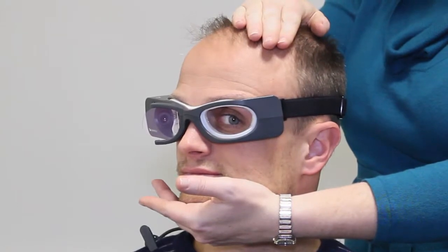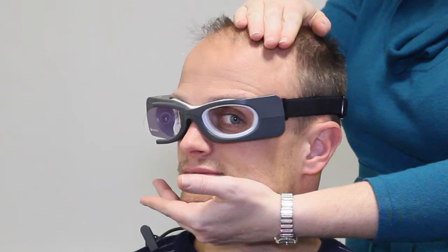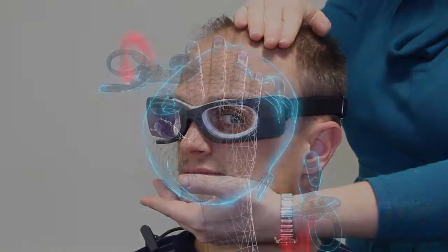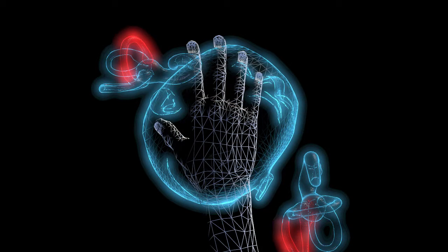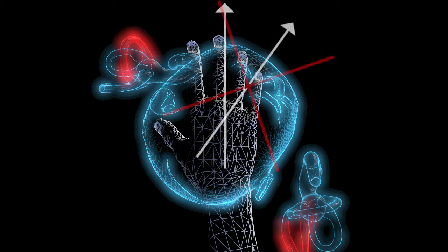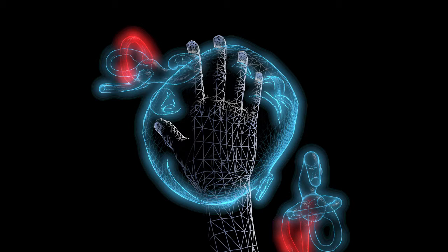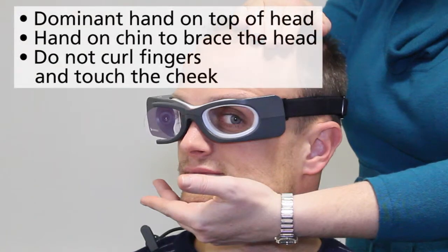Put one hand on the chin and the other hand on top of the head. The hand on top should be your dominant hand. Your fingers should be facing the fixation dot to ensure head impulses go towards the fixation dot and not towards the nose. The hand under the chin should just be bracing the chin — don't curl your fingers up the side of the cheek, as any cheek movement could move the goggle. Just brace the hand under the chin, and the other hand on top of the head.